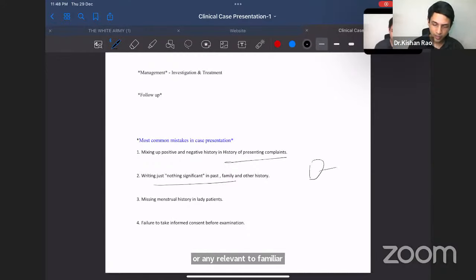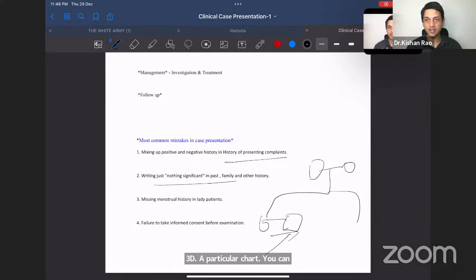If not anything, just put a three generation pedigree chart. Three pedigree chart you can put. And whoever is deceased, you can just mention. This much is, at least this much you should write in family history. And in ladies, menstrual history is a must. We tend to miss that and make a mistake. So, don't miss that. And failure to take during examination, you must take informed consent.